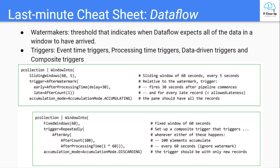I also put two sample code examples here so you can see how to combine windowing, watermark, and triggers to aggregate elements in unbounded collections. I will go through the remaining Dataflow last-minute cheat sheet — including the comparison between Dataflow and Dataproc, two data processing services from Google Cloud — in the next video.